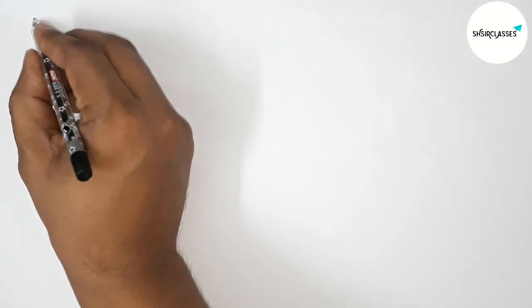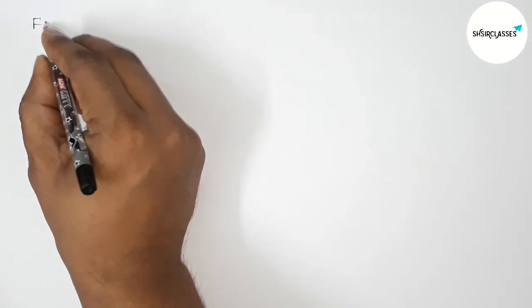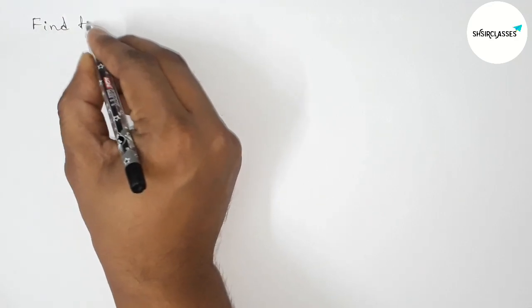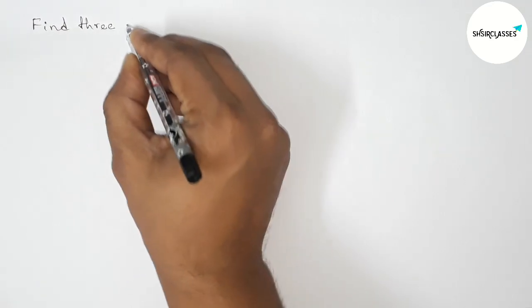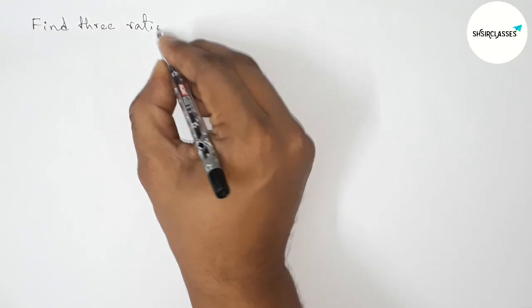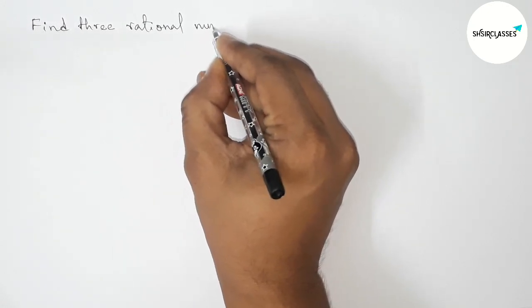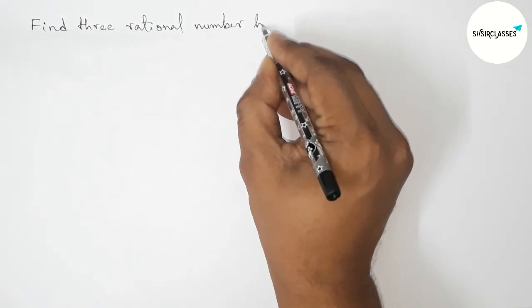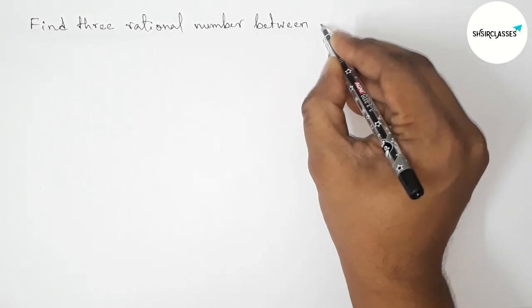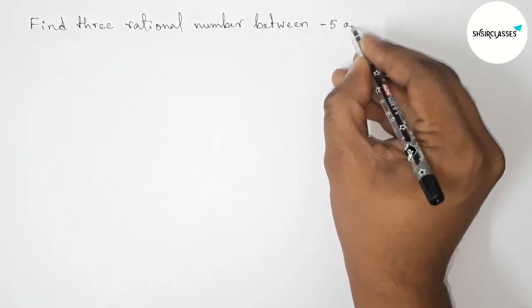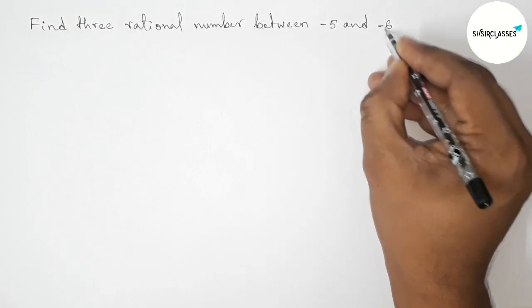Hi everyone, welcome to SI share classes. Today in this video we have to find three rational numbers between minus 5 and minus 6 in an easy way, so please watch the video till the end. So let's start the video.